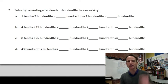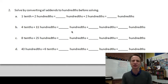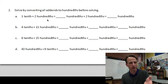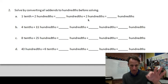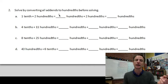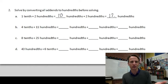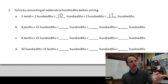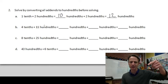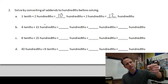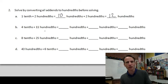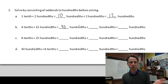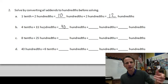We're going to solve by converting all add-ins to hundredths before solving. Here we have one tenth plus two hundredths. The two hundredths are already hundredths, so we leave that. One tenth is ten hundredths, plus two hundredths is twelve hundredths. Does that make sense? A dime and two pennies is twelve cents — it sure does. Four tenths is forty hundredths, and eleven hundredths plus forty hundredths makes fifty-one hundredths.